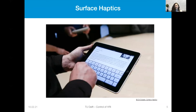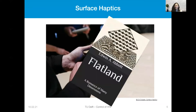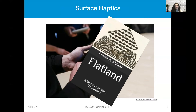Surface haptics is similar to the concept in the book Flatland by Edwin Abbott — I completely recommend it. In that book there is a 2D world with 2D shapes, and suddenly a sphere arrives and tries to convince the 2D shapes of a 3D world. What surface haptics does is create all its effects in 2D but makes the user believe they are experiencing a 3D world.